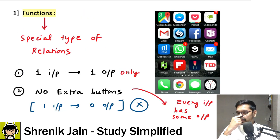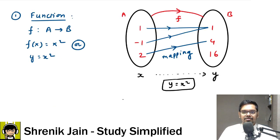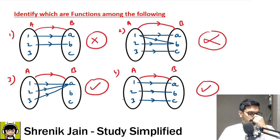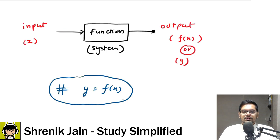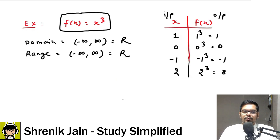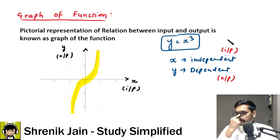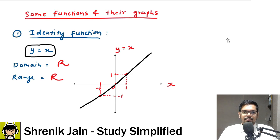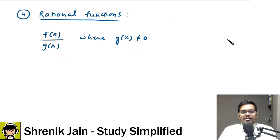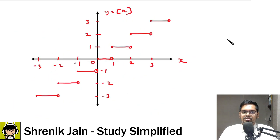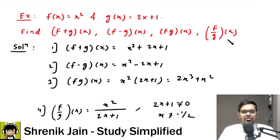That's it for today. I hope you've understood everything about the basics of functions: functions as a special type of relation, mapping diagrams, the difference between relations and functions, domain and range, functions as input-output systems, graphs of various functions (identity, constant, polynomial, rational, modulus, signum, greatest integer), and basic operations on functions. Thank you for watching.